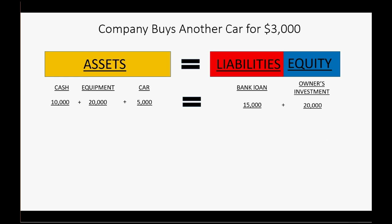Let's imagine the company buys another car for $3,000 cash. If we paid cash, the amount of cash goes down, but if we bought a car, the money value of the cars increases. The new balance of cash after this transaction is $7,000 and the new balance of cars is $8,000. All the other numbers in the equation did not change, and the equation stays equal after this transaction.